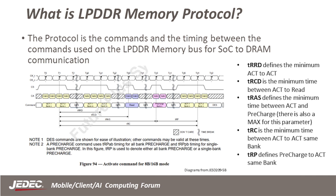Some examples of these symbols are TRRD, which is the minimum act-to-act timing; TRCD, the minimum act-to-read; TRAS, the minimum act-to-precharge, which is the amount of time the bank is open; TRC, which is the row cycle time or minimum act-to-act same bank; and lastly, TRP defines the minimum time between the closing of a bank with a precharge command and the opening of a bank with an act command.